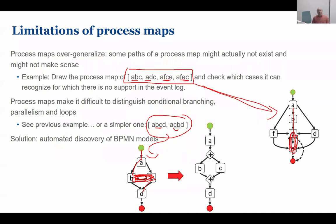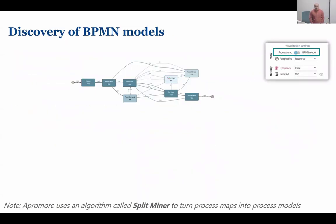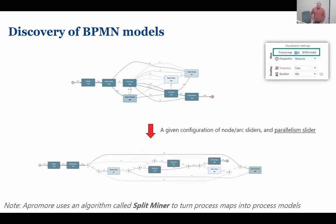To cope with this limitation, when we have parallelism in the process, it is not a good idea to use process maps to analyze it. It is better to discover a BPMN model from the event log. There are several techniques that, given an event log and the corresponding process map, can discover a BPMN model containing parallel gateways, exclusive choice gateways, and inclusive choice gateways. These algorithms go into the data and try to separate what is repeated, what is a choice, and what is parallelism.